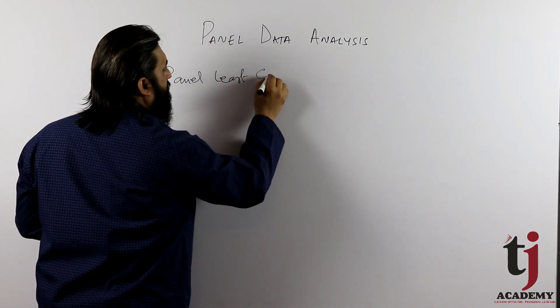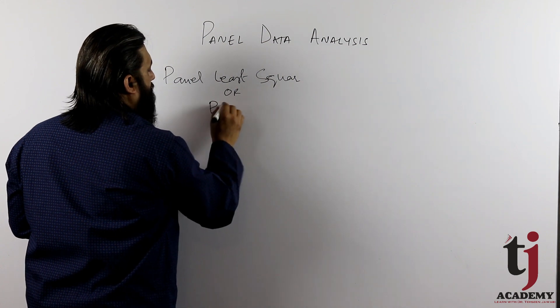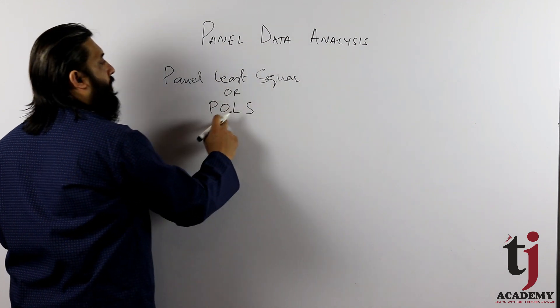Pool Ordinary Least Square or P.O.L.S., Pooled Ordinary Least Square apply. This is a model.